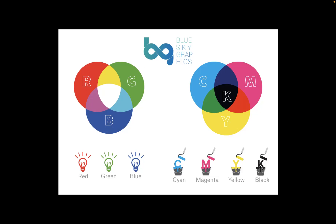One thing to keep in mind as well: you are viewing the CMYK file on an RGB screen, so the final product may vary from what you see on your screen. Basically, RGB is for anything on screens and CMYK is for anything that has the intention of being printed.